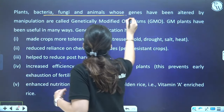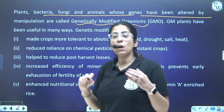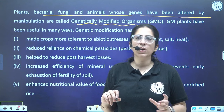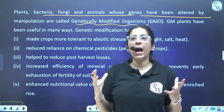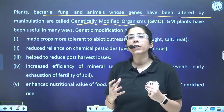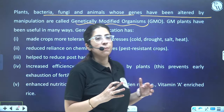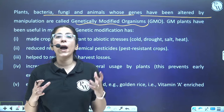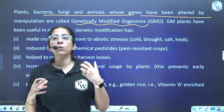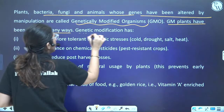Plants, bacteria, fungi, and animals whose genes have been altered by manipulation are called genetically modified organisms. We are talking specifically about genetically modified plants and why they are useful. Genetic modification has made crops more tolerant to abiotic stress. Will this increase productivity? Definitely. GM plants have been useful in many ways through genetic modification.